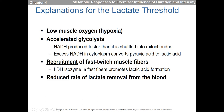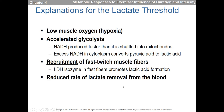Recruitment of fast-twitch muscle fibers also contributes. The LDH isozyme in fast-twitch or skeletal muscle promotes lactic acid formation, whereas a different LDH isozyme tends to convert lactic acid back to pyruvic acid. There's also reduced removal of lactate from the blood. Essentially, so much glycolysis is occurring and we need to get rid of these H ions, so we throw them into lactate dehydrogenase to continue generating ATP in the energy generation phase of glycolysis.